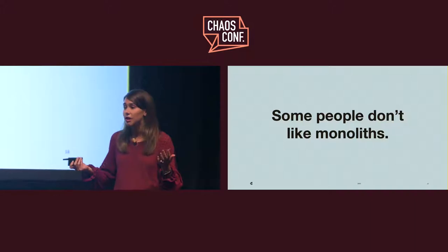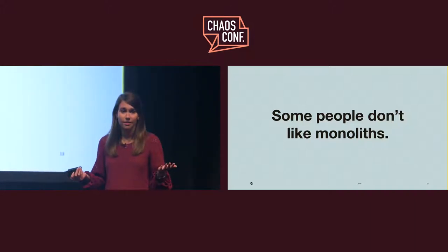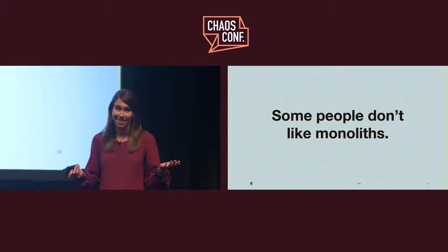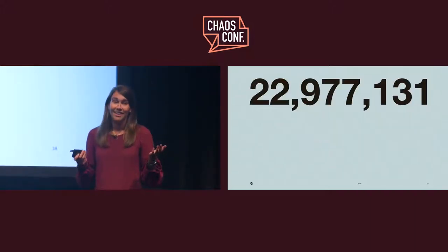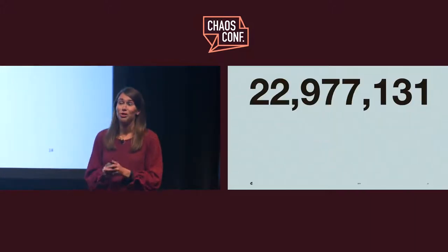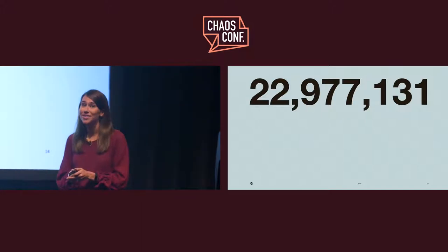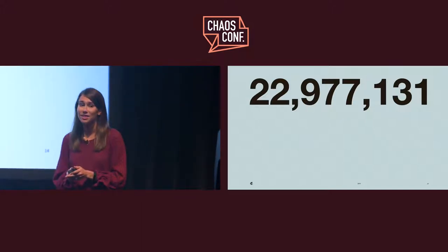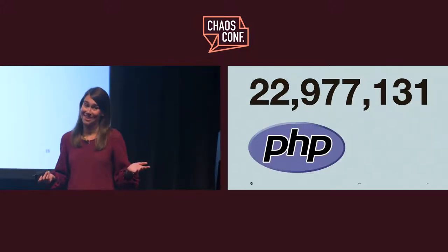That's not what this talk is about either. But here's the thing — MailChimp has a monolith. It's a big one. Almost 23 million lines of code, and most of them PHP.